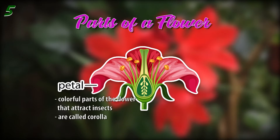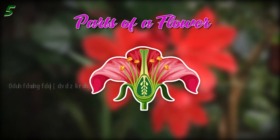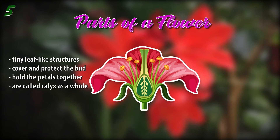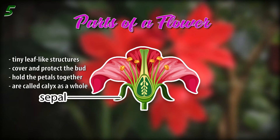The petals are the colorful parts of the flower that attract insects. Collectively, these petals are called corolla. At the base of the flower are tiny leaf-like structures that cover and protect the bud and hold the petals together, called sepals. They are called calyx as a whole.